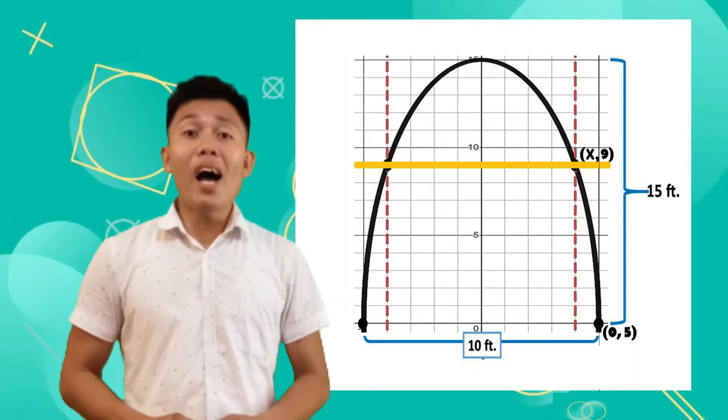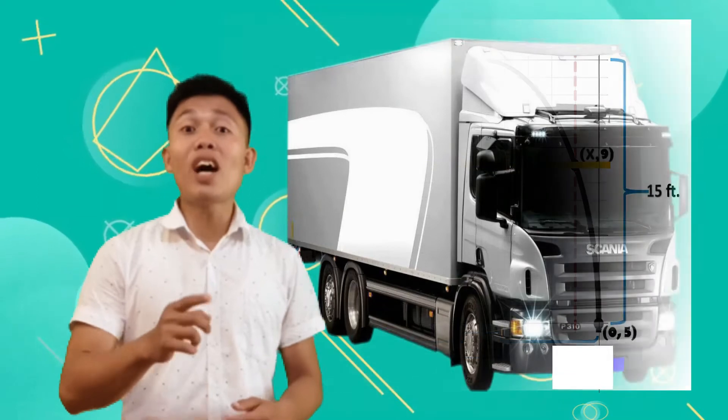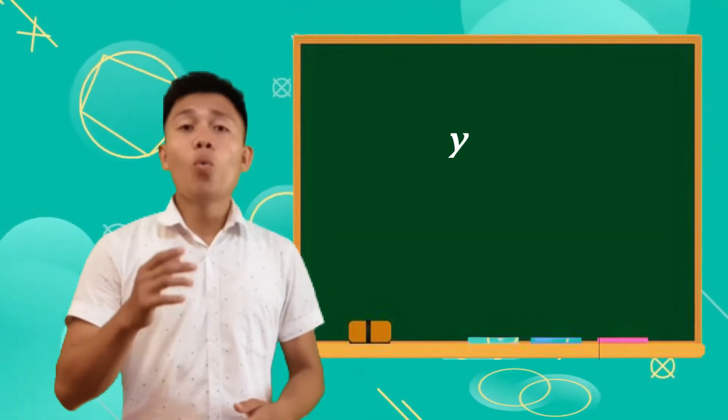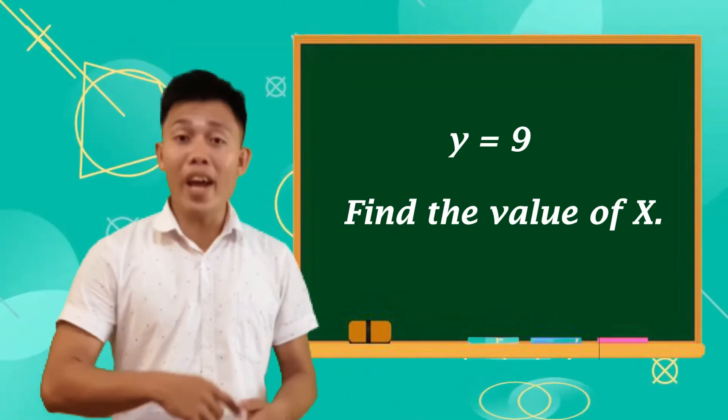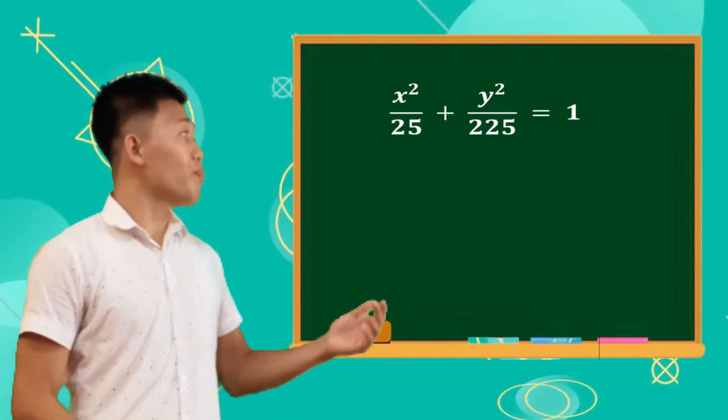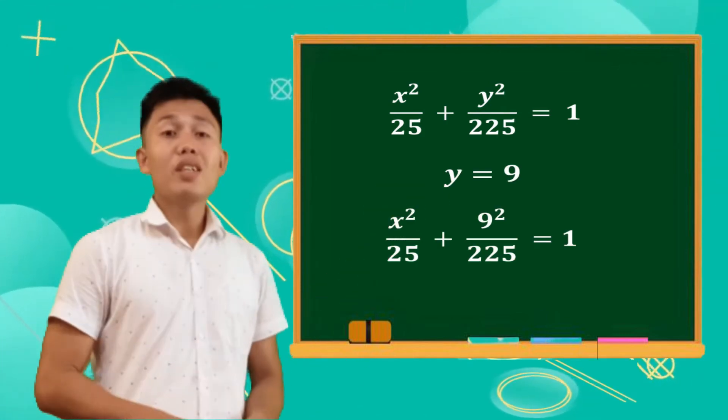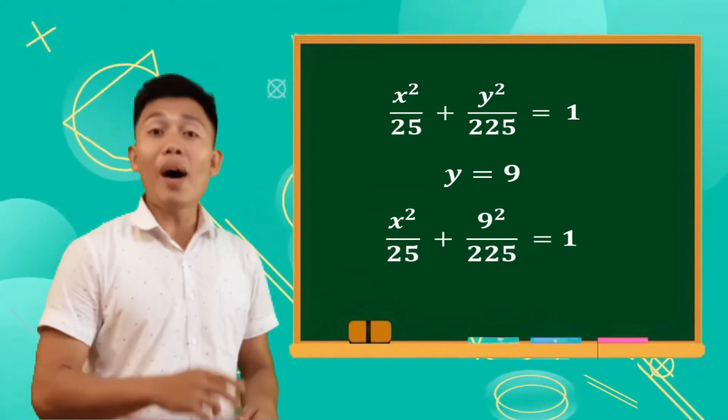Since 9 feet is the possible height of the semi-ellipse arc when the truck can enter the gate, we can interpret it as y equals 9 and we are going to find the value of x. So, back to our equation, just substitute the value of y, it will become 9 squared. Simplify it, it will become 81.